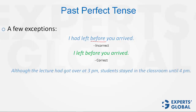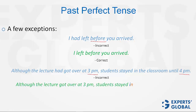Let's take one more example. It is similar to the example on the last slide. This sentence is not correct, because the timings are given. One action got over at 3 pm, the other action got over at 4 pm. The timings are very clear, and therefore we know which action happened first, and therefore the usage of past perfect tense here would be redundant. The correct sentence uses the simple past tense — the default tense — which is the correct usage.